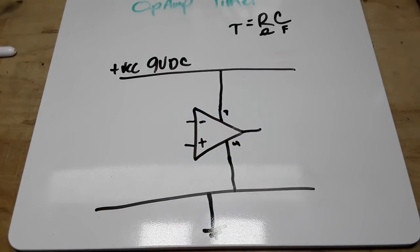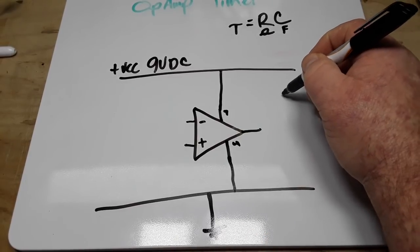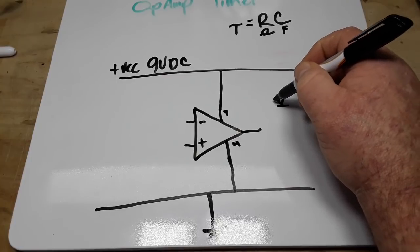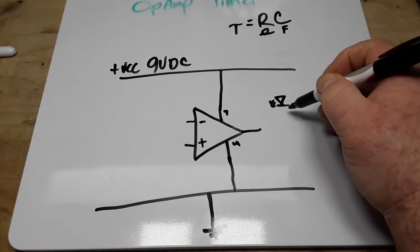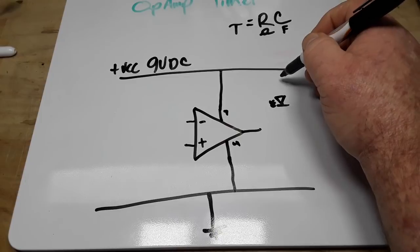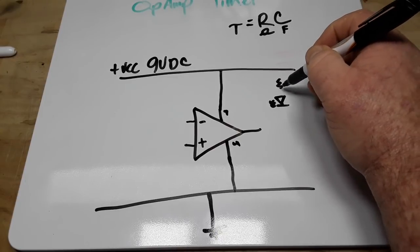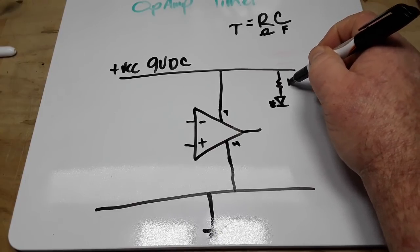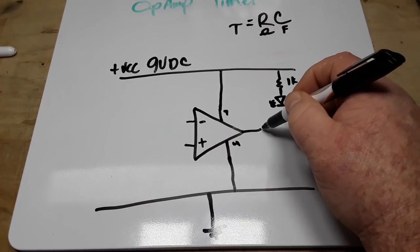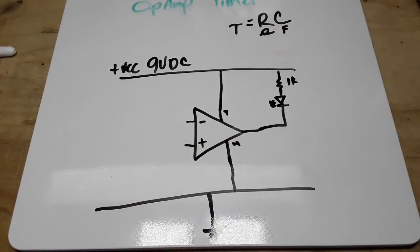And then for demonstration purposes, we're going to put an LED here to show you when our timer is working. And it's going to need a resistor. We'll say a 1k resistor just to limit the current.